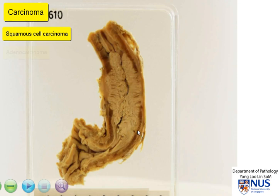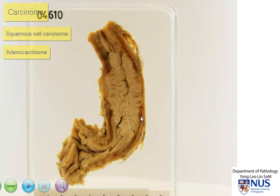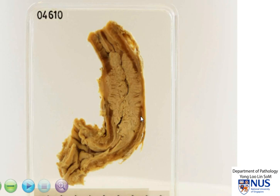The other possibility is an adenocarcinoma. Adenocarcinomas tend to occur more in the very distal esophagus and can sometimes even involve the gastroesophageal junction and the proximal stomach.